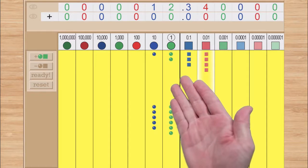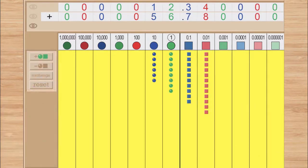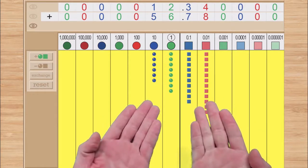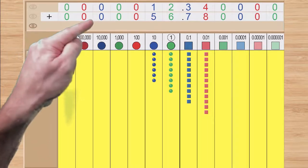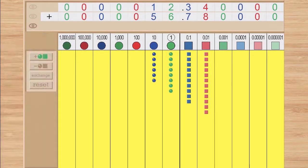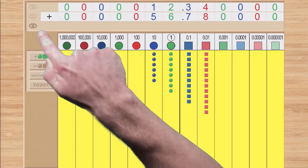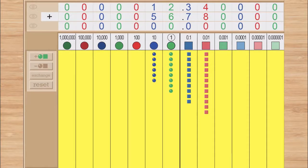Once you are happy with the addend, tap the Ready button and the board will move into solving mode. Notice that your addends have been pushed together and the second addend is now symbolized in another row of cards. That third eye that just appeared will give you another row of cards with which you can symbolize your answer.